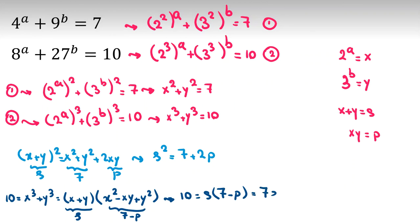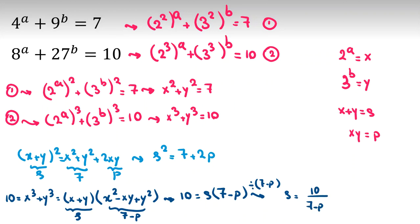So here we can say 10 equals 7s minus sp. We can calculate s in terms of p. If we divide both sides by 7 minus p, s equals 10 over 7 minus p. Now if we replace it in the first equation, n over 7 minus p, the whole thing squared, equals 7 plus 2p.